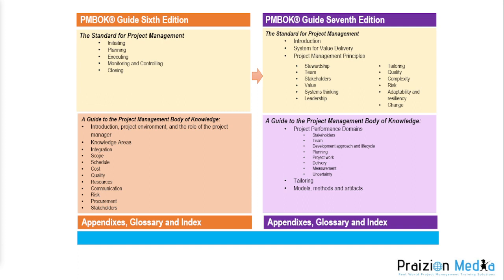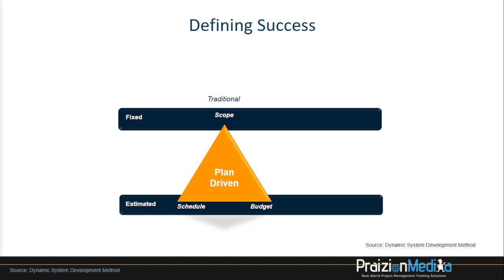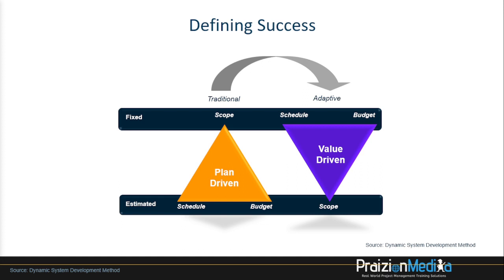Making a case for project management in general, you can look at it either from a traditional lens, where scope is fixed and schedule and budget are estimated or flexible, versus agile or adaptive, where schedule and budget are fixed and scope is flexible. In the PMBOK Guide 6th edition, there is actually more agile mention than in the 7th edition, because the 6th edition includes concepts, trends, tailoring, and considerations for agile at the beginning of every chapter. So agile is actually pretty solidly covered in the 6th edition.